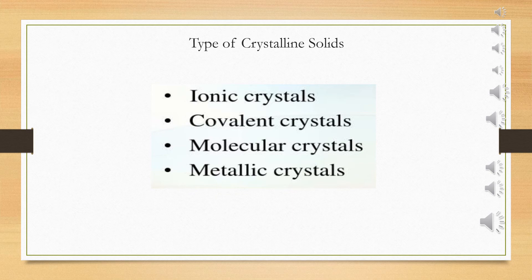Ionic crystals or ionic solids are those solids in which the constituent particles are positively charged cations and negatively charged anions, which have strong electrostatic forces of attraction between them. They are very hard and brittle in nature and have very high melting and boiling points. Ionic solids are poor conductors of electricity in the solid state, but in solution, aqueous form, or the molten state, they are very good conductors of electricity. Examples include sodium chloride, copper sulphate, or any other salt.